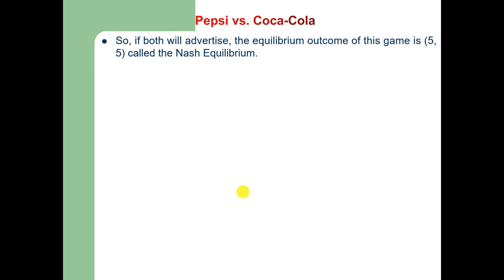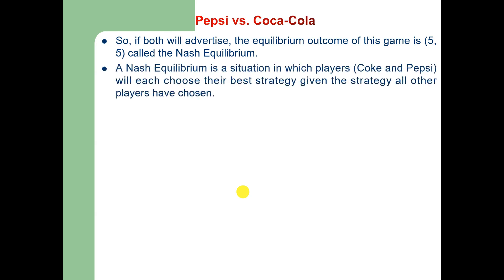If both firms advertise, the equilibrium outcome of this game is 5-5. Both of them will earn a payoff equal to 5, which may represent 5 million dollars. This is known as the Nash equilibrium — a situation in which each player, Coke and Pepsi, chooses their best strategy given the strategy that all other players have chosen. For both of them, the dominant strategy is to advertise, and this outcome is the Nash equilibrium.